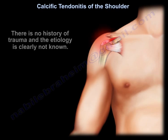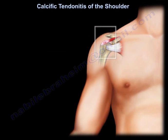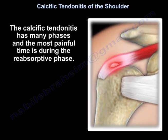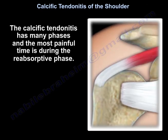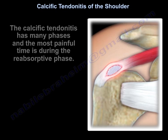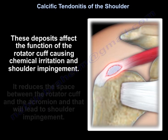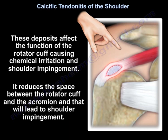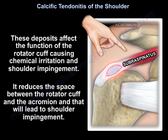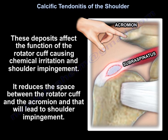There is no history of trauma, and the etiology is clearly not known. Calcific tendinitis has many phases, and the most painful time is during the resorptive phase. These deposits affect the function of the rotator cuff, causing chemical irritation and shoulder impingement. It reduces the space between the rotator cuff and the acromion, leading to shoulder impingement.